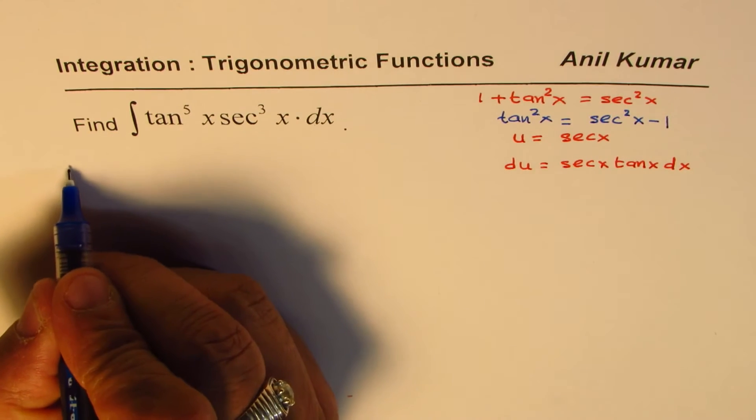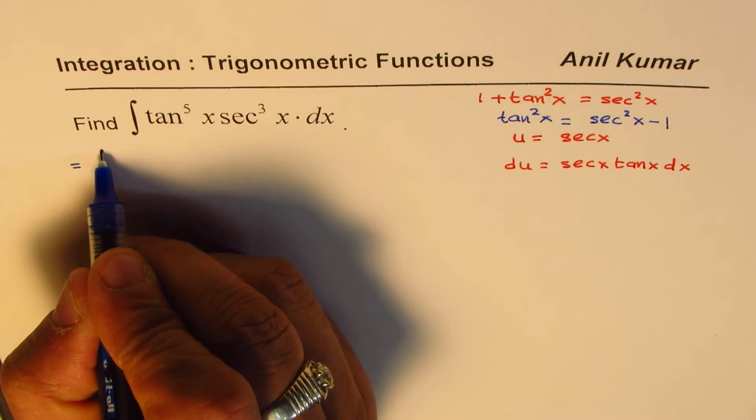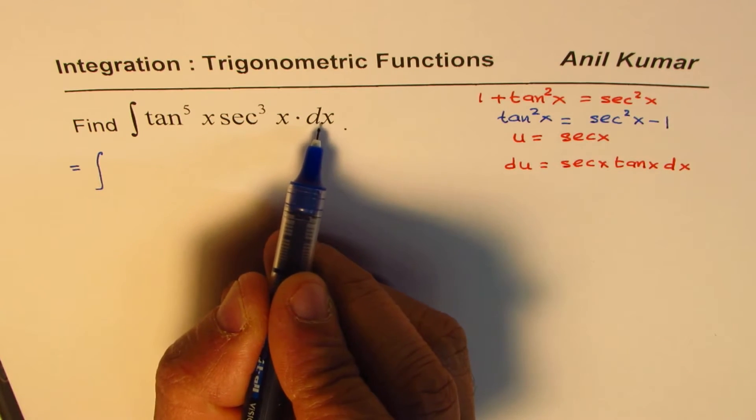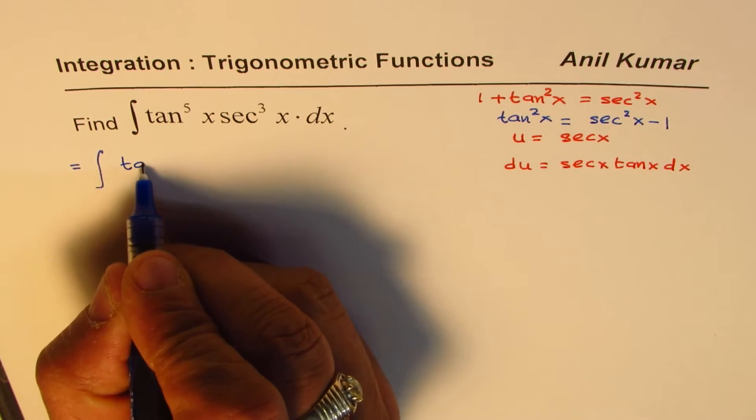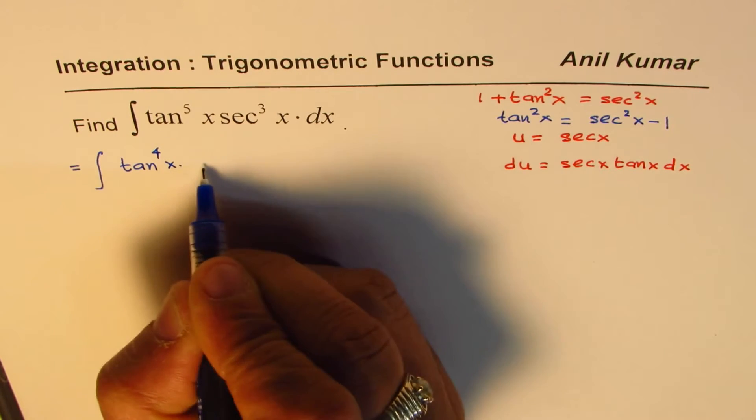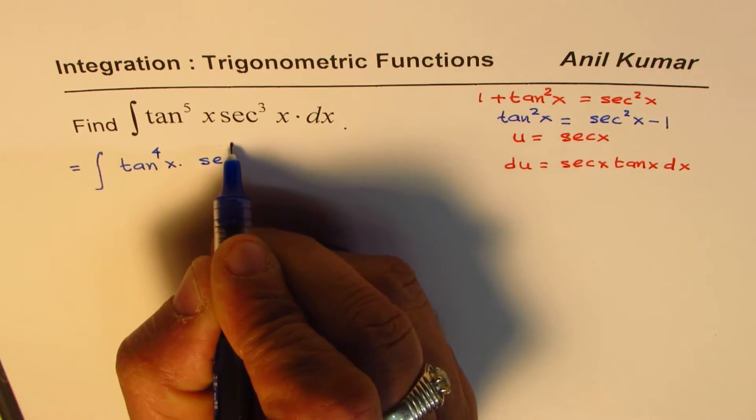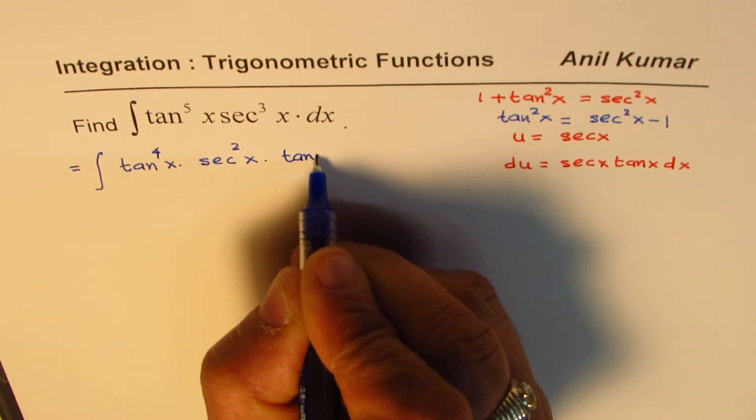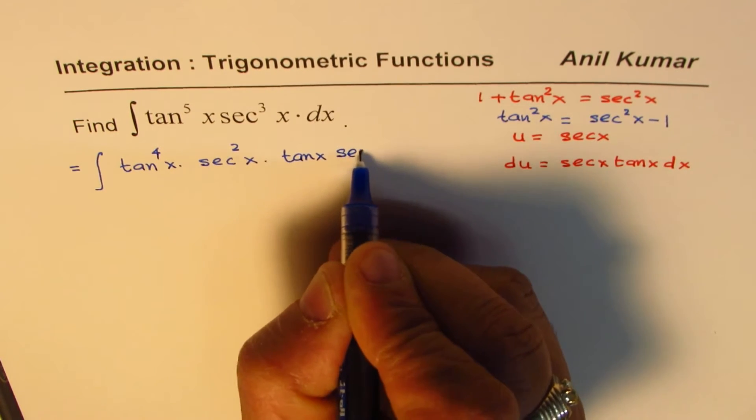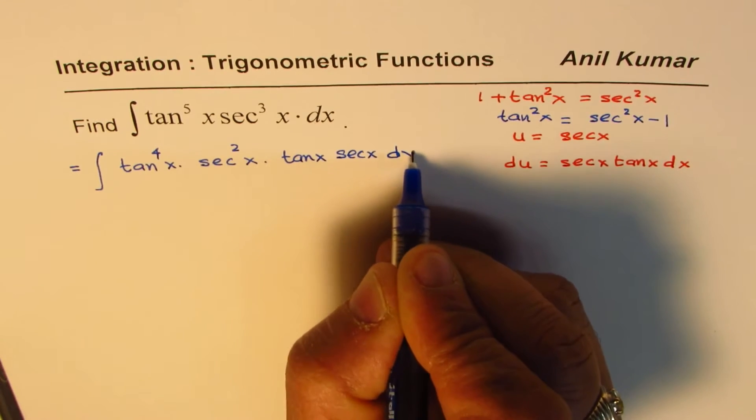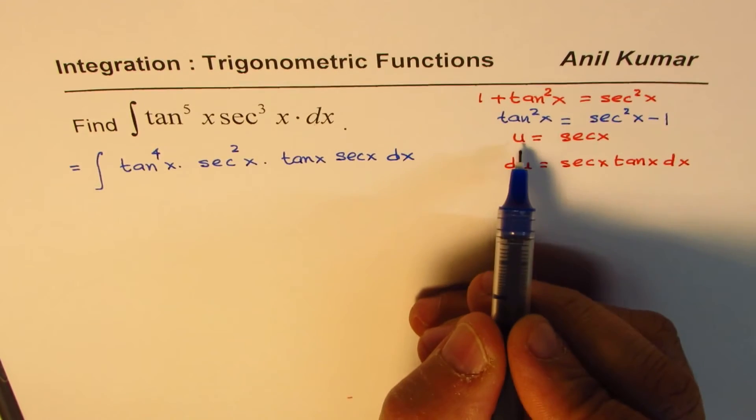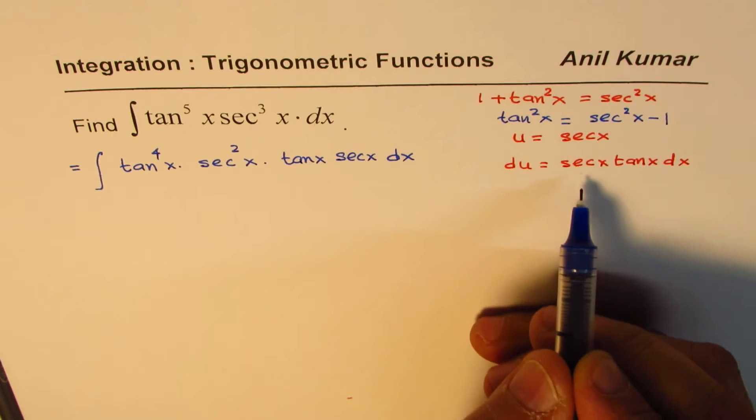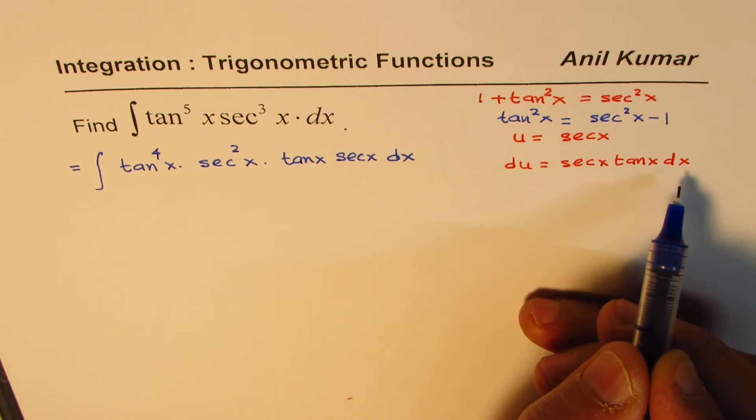So now what we will do here is that we will rewrite this factoring out tan x and secant x with dx. So we have tan to the power of 4x secant square x and then we have tan x secant x dx. And now we are going to do the substitution u equals to secant x, du equals to secant x tan x dx.